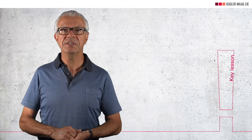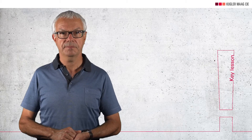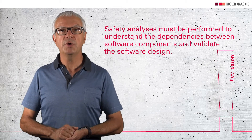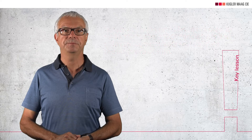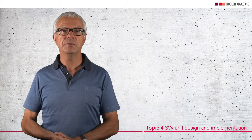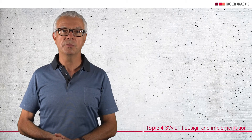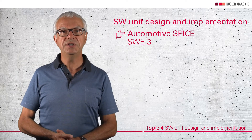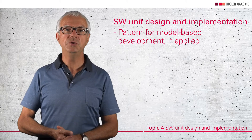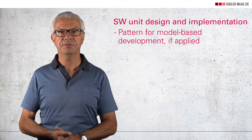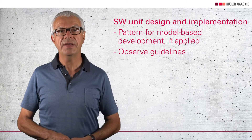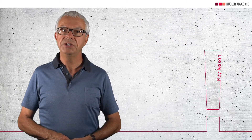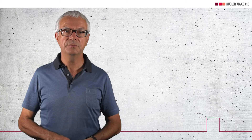Ultimately, all the analyses are about securing the software design. Key lesson 7: safety analysis must be performed to understand the dependencies between software components and validate the software design. The next phase is again very similar to any other software development process, for example in compliance with Automotive SPICE. A software unit design is required, which can also serve as a model for applying model-based development. ISO 26262 also has criteria for guidelines that must apply here. There is no additional key lesson to capture at this point from a functional safety perspective.